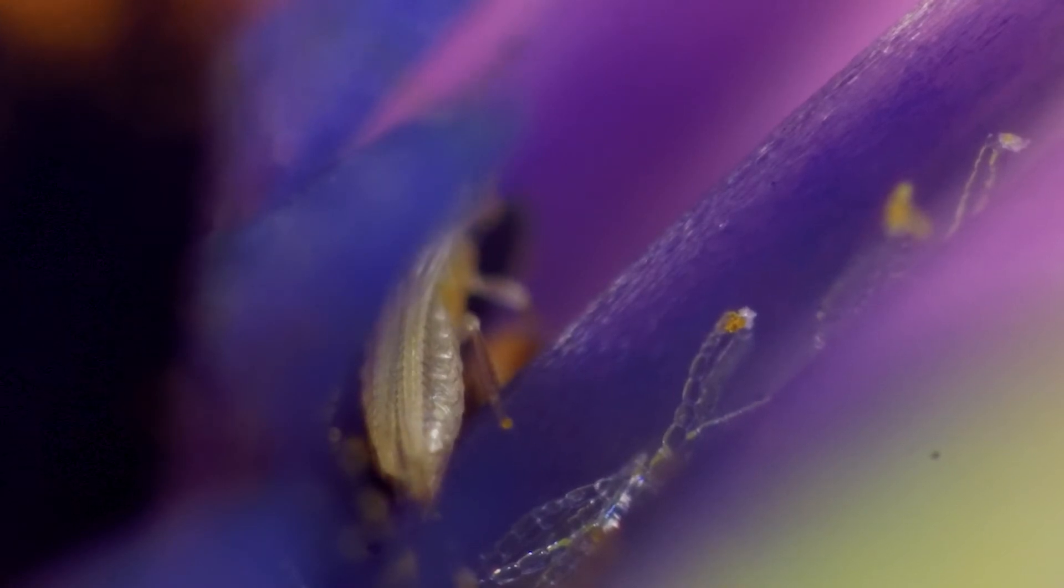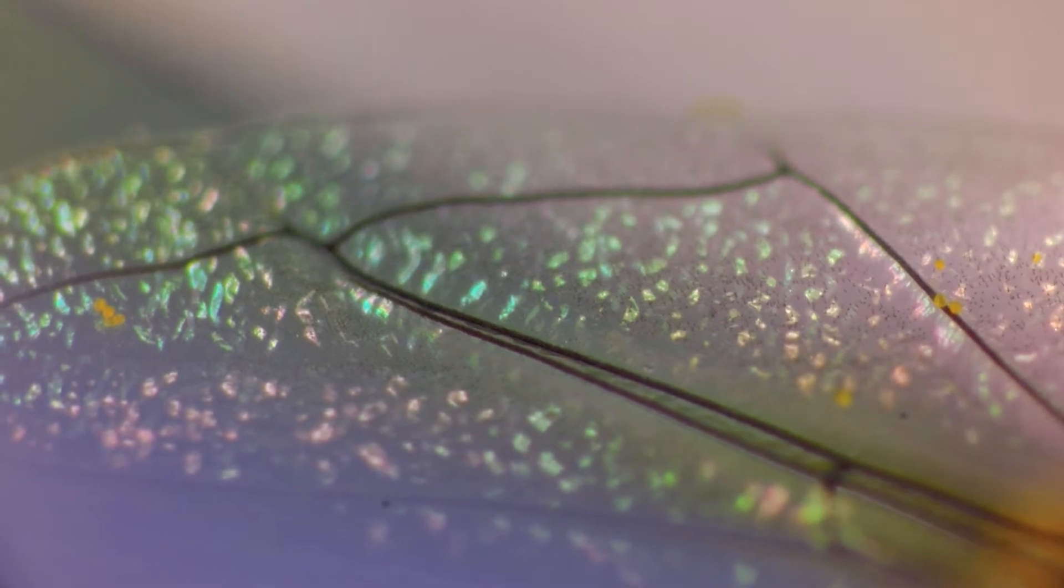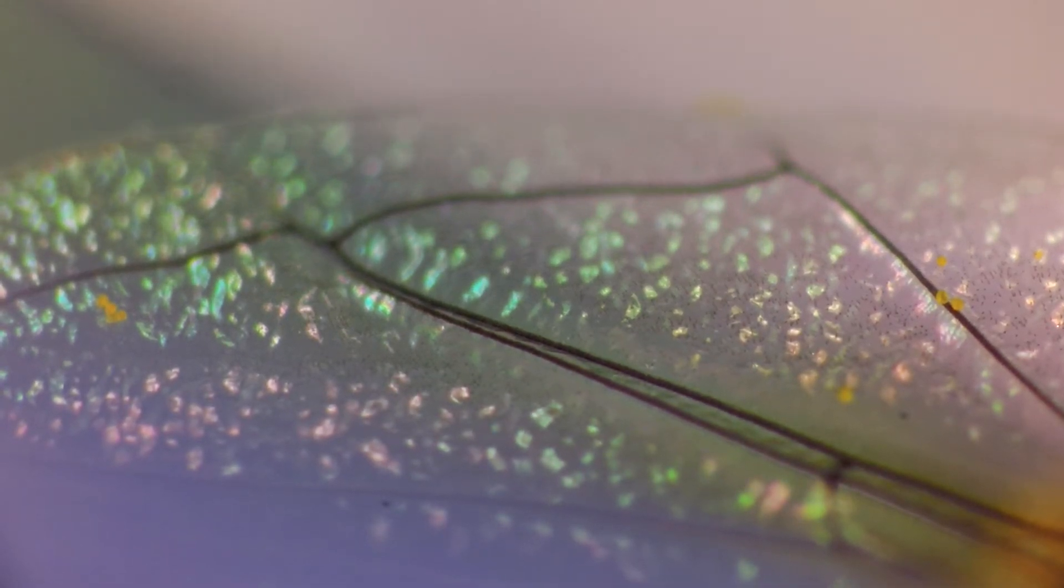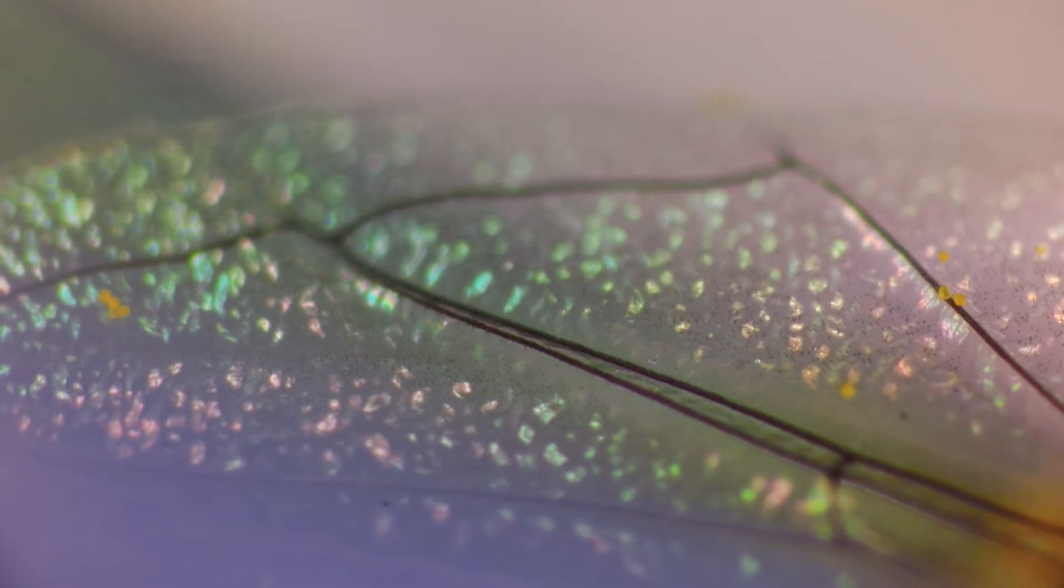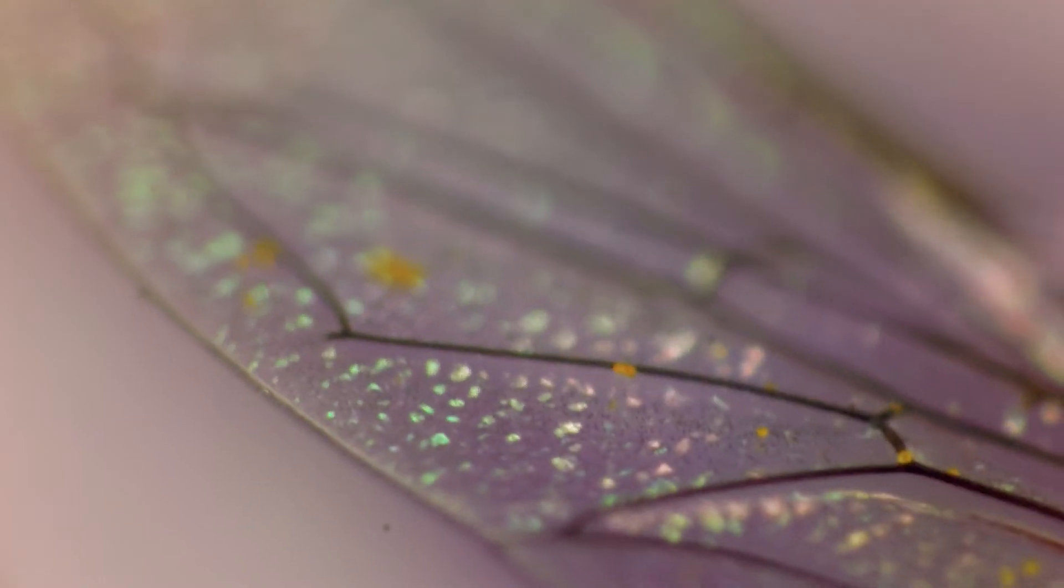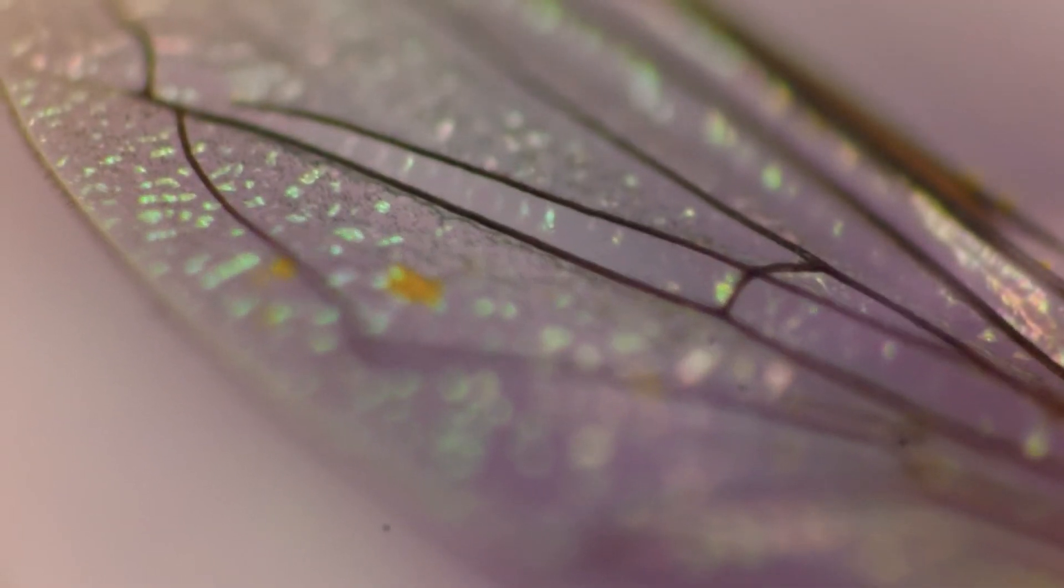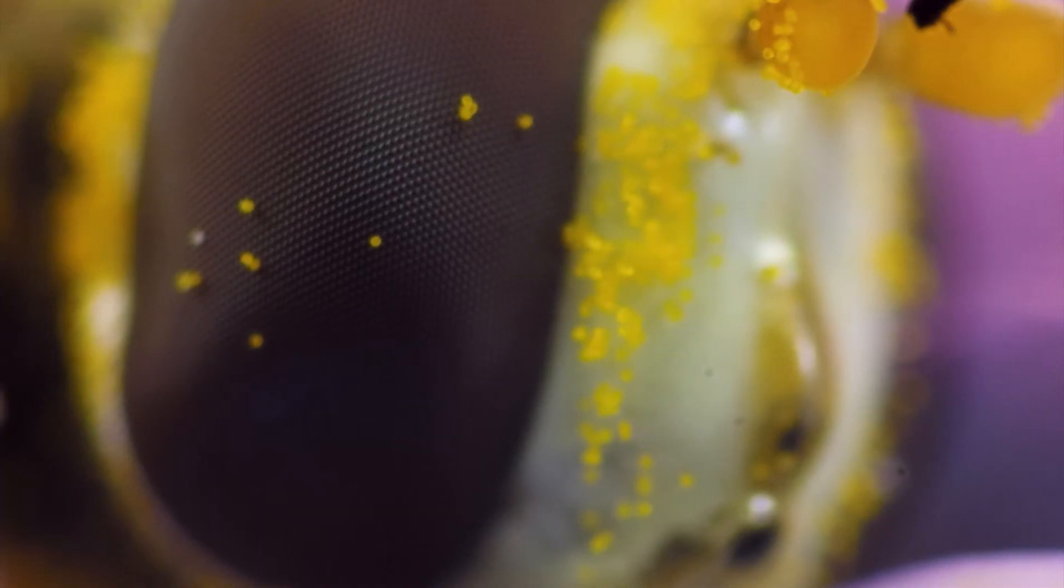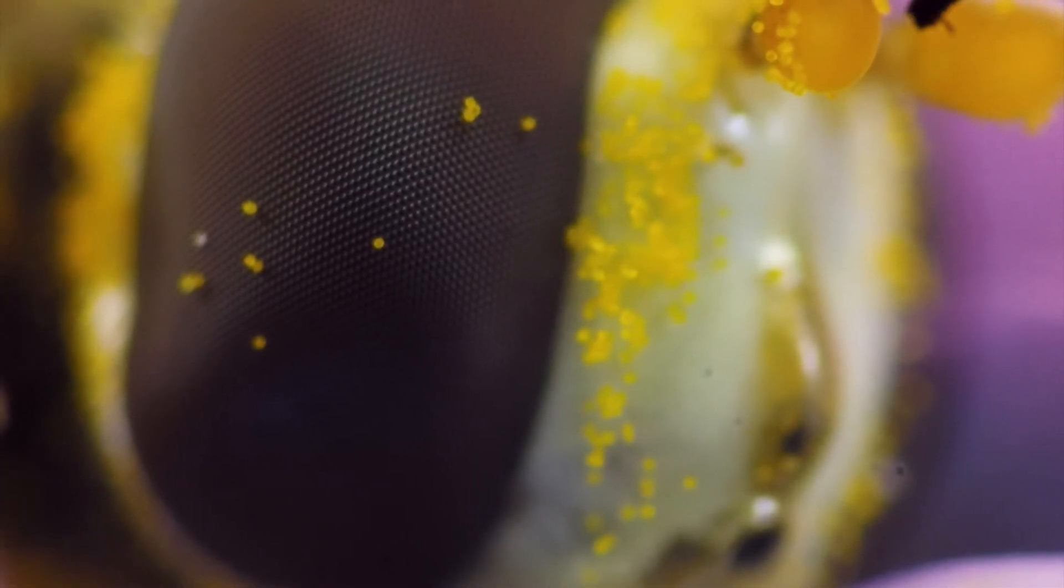If anyone knows what they are they can let me know. That'd be great. On the same flower there was another kind of insect. Something a bit bigger. But since I'm focusing on such a small area this is about as far back as I can get. Let's see how long it takes people to figure out what it is.